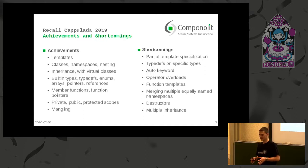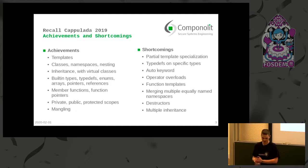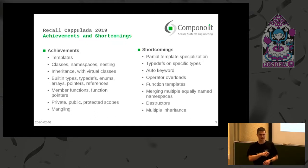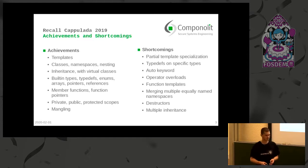So what are the things we didn't achieve? One great but really complex feature of C++ is partial template specializations — that's something we didn't make work. There are also many things we could have done with just more effort, like typedefs on specific types, the auto keyword, operator overlays, function templates, and so on. And there are also things we didn't even try, like destructors or multiple inheritance.